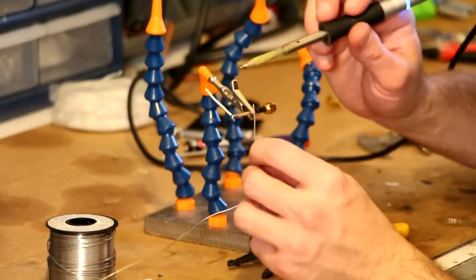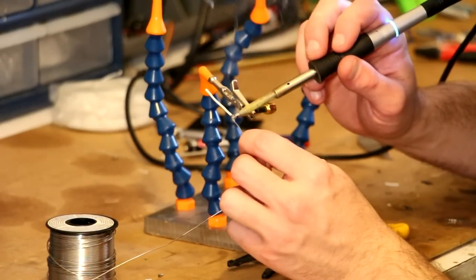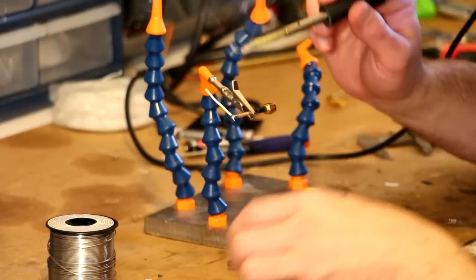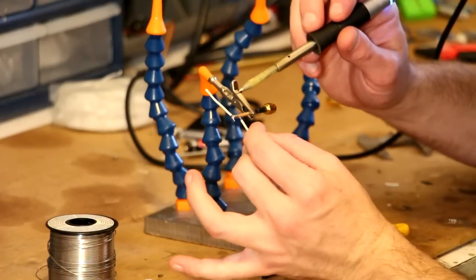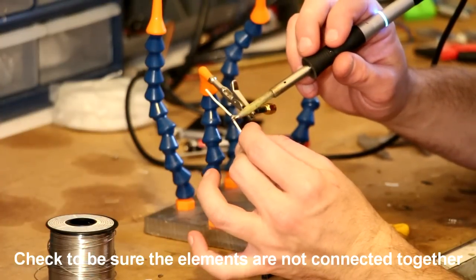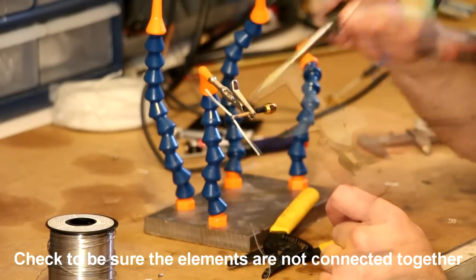Once done, tin up the center element of your antenna cable. Then take your other wire again with about a quarter of an inch stripped off the end and solder it to your antenna cable.